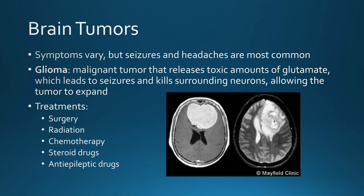Tumors are also named based on their tissue of origin. If the tumor is in the glial cells, which protect and support neurons in the brain, they are called glioblastoma. A malignant form of tumor in the glial cells is called a glioma. These gliomas can release toxic amounts of glutamate in the surrounding tissue, resulting in seizures, and can kill surrounding neurons, allowing the tumor to expand. Treatments for brain tumors usually involve surgery if it is possible to remove the affected part.